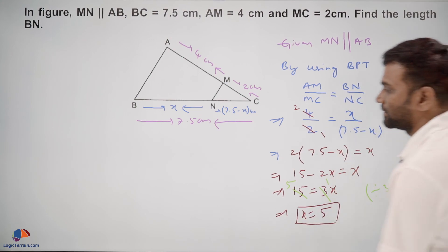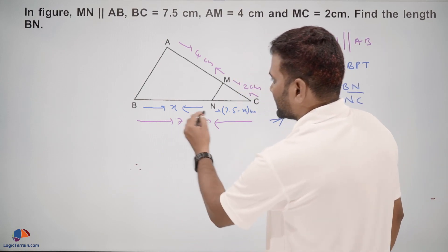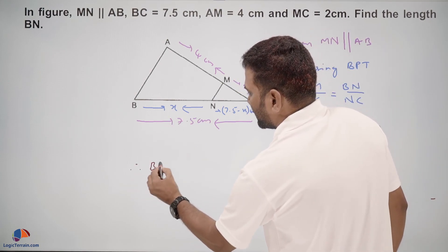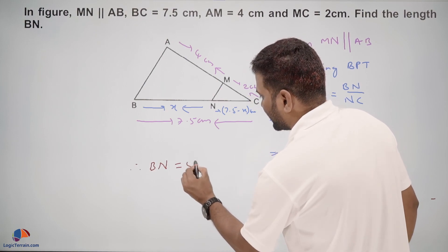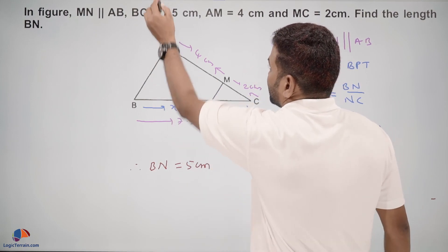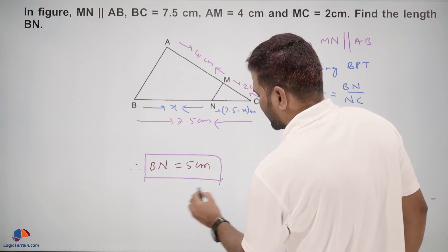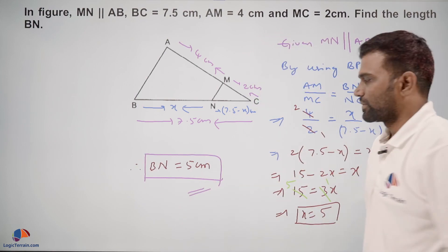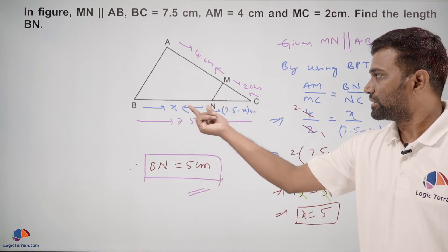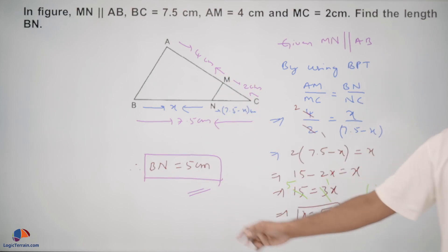Therefore, BN equals 5 centimeters. The required length BN is 5 centimeters.